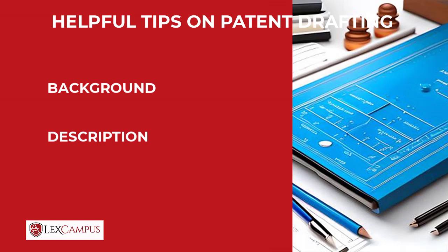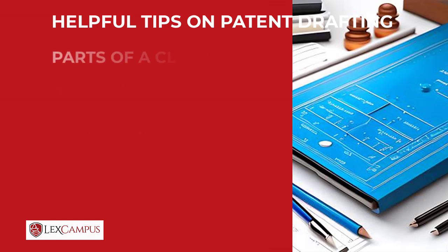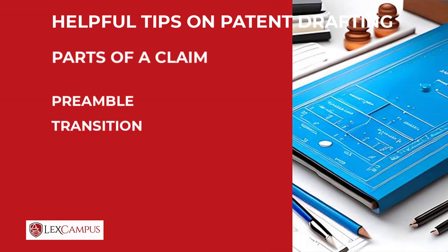You should know by now that a claim has certain parts. A claim has a preamble, it has a transition, and it has the body. Know that, and you have to bring that out in your drafting. These are the things you will concentrate on while answering a question in Part C, which is a drafting question.